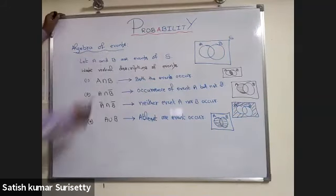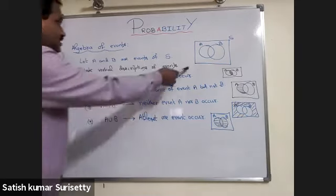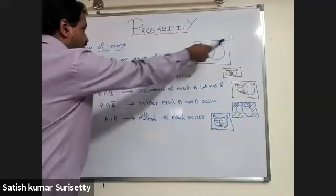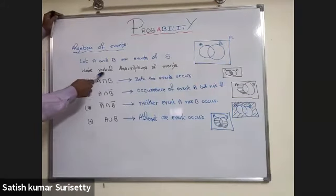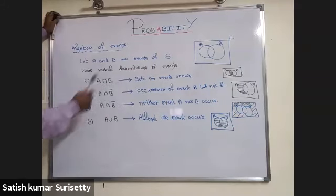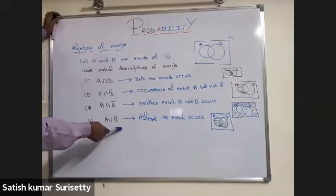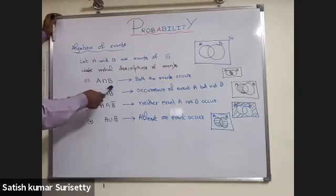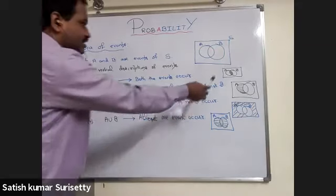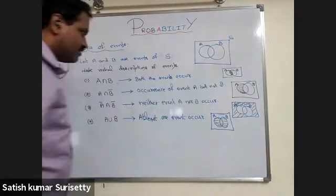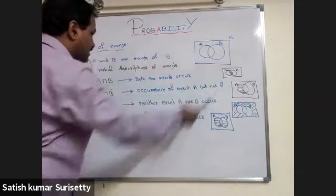Algebra of events: consider two events A and B of the sample space S, meaning A and B are subsets of S. The verbal description of A intersection B is that both events occur — in the Venn diagram it shows the common region for A and B, meaning all elements in A as well as B. A intersection B bar means occurrence of event A but not the occurrence of B. A bar intersection B bar means neither event A nor event B occurs.